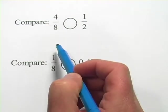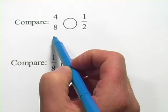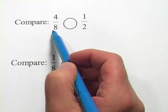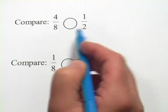This one, you can probably figure out pretty quickly. If you reduce 4 eighths, divide the top by four, divide the bottom by four, you get one half. So you can see that these are the same.